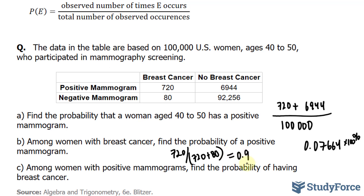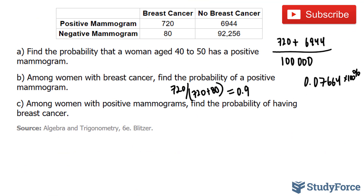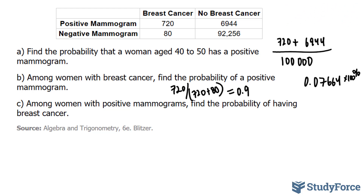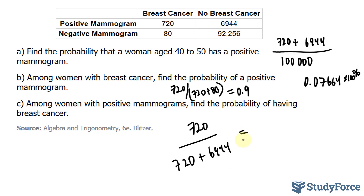This comes to show how important mammograms are for detecting breast cancer. Lastly, among women with positive mammograms, find the probability of having breast cancer. We take 720 and divide by the sum of those two numbers. You should end up with a number of approximately 0.094.